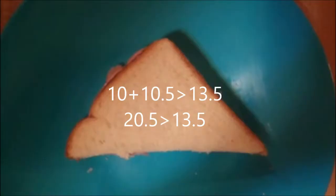You would take the two shorter sides and then add them up and make them larger than the larger side. So in this case, the shorter sides would be 10 and 10.5 and you would make them greater than 13.5. And when you add them up, 10 and 10.5, that makes 20.5, which is greater than 13.5, thus proving that it is a triangle.